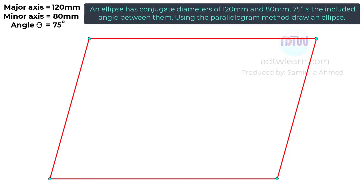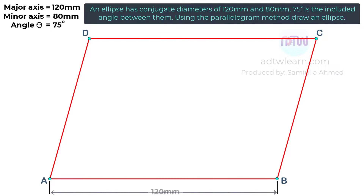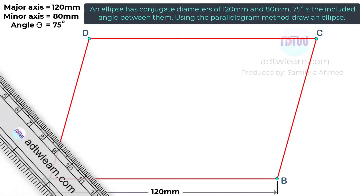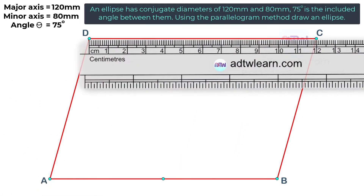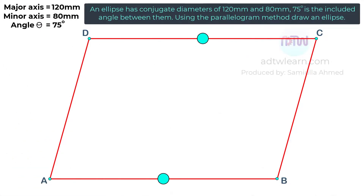Do the naming of this parallelogram as A, B, C, and D. After this, we need to divide this parallelogram into four equal parts. We know this length is 120 millimeters, half of this will be 60 millimeters — mark a point 6 centimeters from point A. Similarly, mark a point 60 millimeters away from point D. Name these points as R and S. Join these two points with a line.